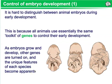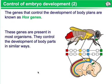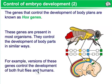This series of pictures shows the development of a bat embryo at different stages along its development. The genes that control the development of body plans are known as Hox genes. These genes are present in most organisms and control the development of body parts in similar ways. For example, versions of these genes control the development of both fruit flies and humans. Mutations in Hox genes can cause structures to appear in the wrong places.